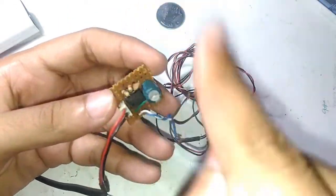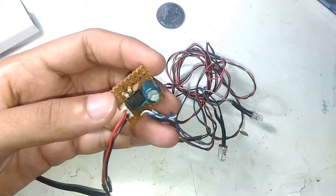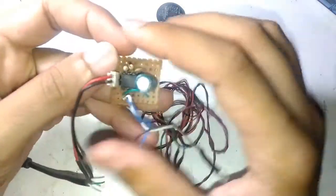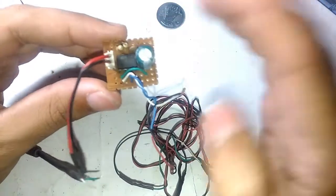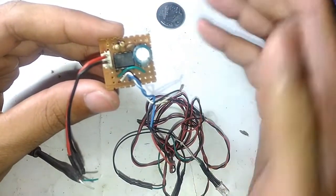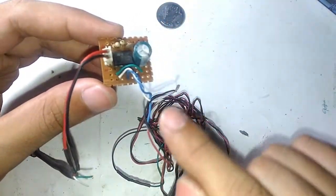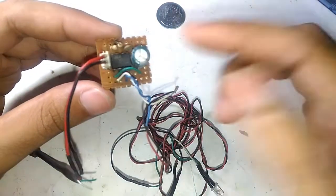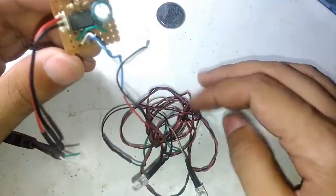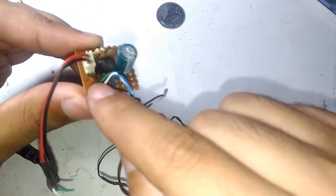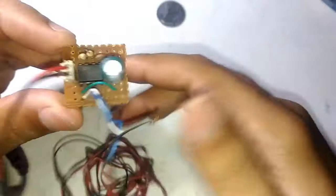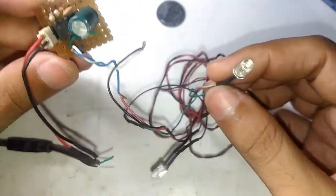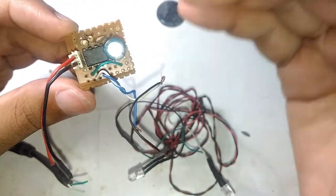This thing is based on a 555 wired in an astable multivibrator circuit. An astable multivibrator will produce a continuous square wave output. In this case, I have connected the output of the IC, which is pin number three, to the LEDs.